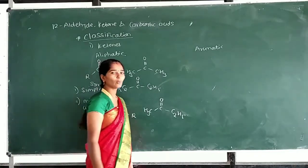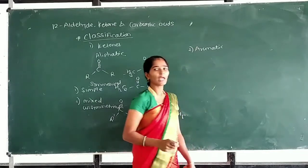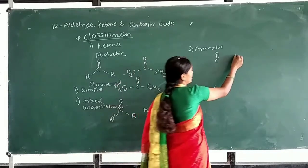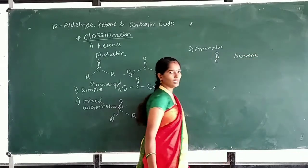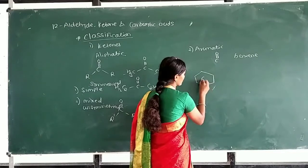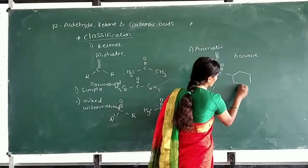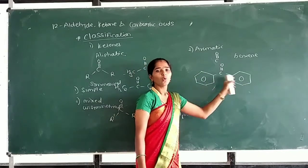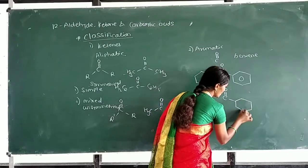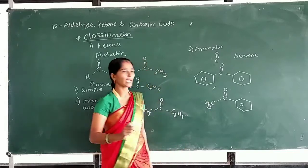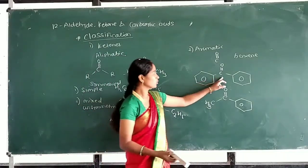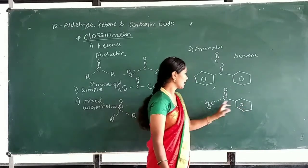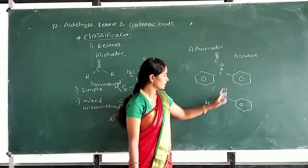Second type of ketones: aromatic ketones. In aromatic ketones, the carbonyl group is attached to a benzene ring. For example, when the C=O is attached to two benzene rings it is called benzophenone, and when attached to one alkyl group and one benzene ring it is called acetophenone.